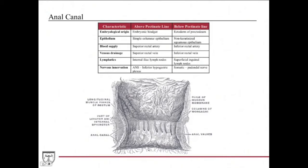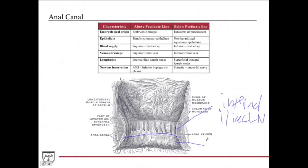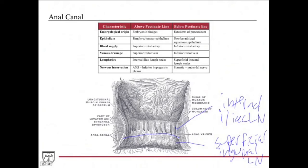For lymphatics: above the pectinate line, drainage goes to the internal iliac lymph nodes. Below the pectinate line, drainage goes to the superficial inguinal lymph nodes in the groin area. This is clinically important because if a cancer in the anal region metastasizes lymphatically, its location relative to the pectinate line determines where metastases will be found.